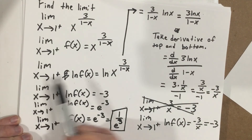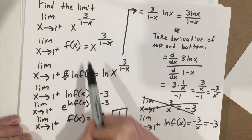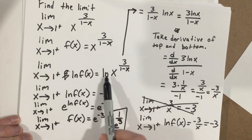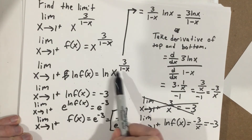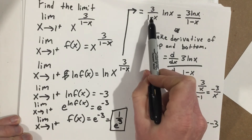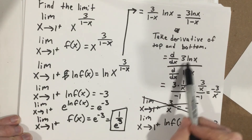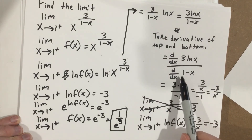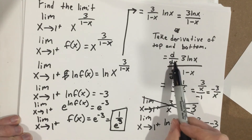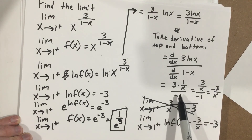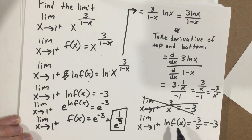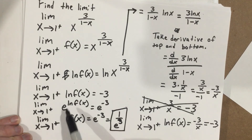So the actual limit for this original function is 1 over e to the third power. To recap: we wrote it in function notation, took the natural log of each side to bring the exponent to the front, combined terms, applied L'Hôpital's rule by taking derivatives of the top and bottom, got a limit of negative 3 for natural log f of x, then cancelled the natural log to find f of x equals 1 over e to the third.